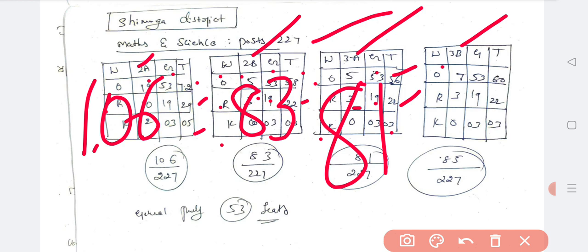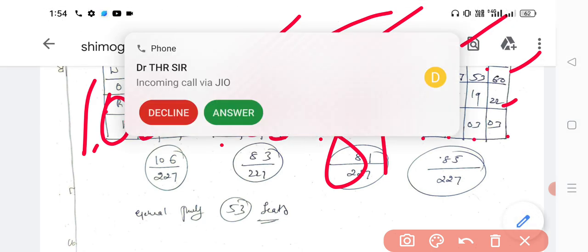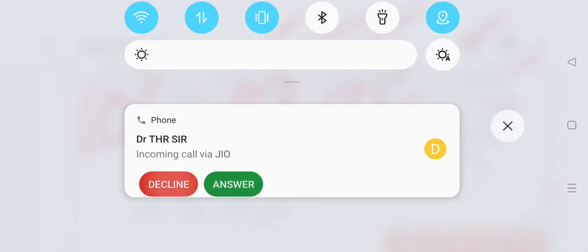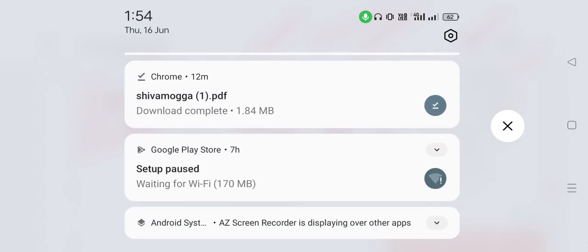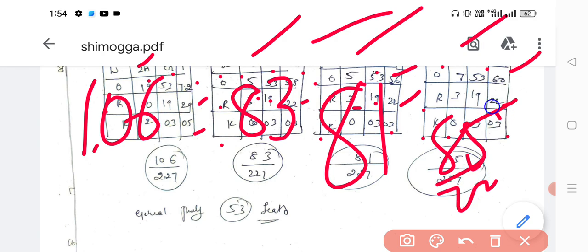Last 3B. Others 7, General 53, 60. Rural 3 plus 19, 22. Kannada medium is 0 plus 3. Totally 85. Here, totally 85 out of 227. Totally 53 general, purely general.